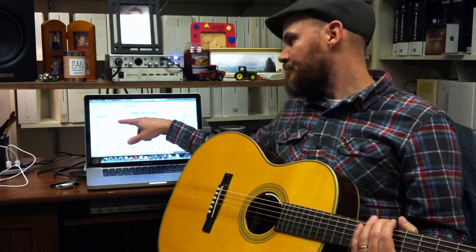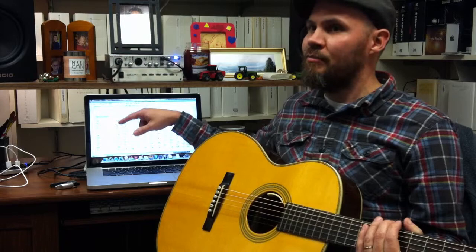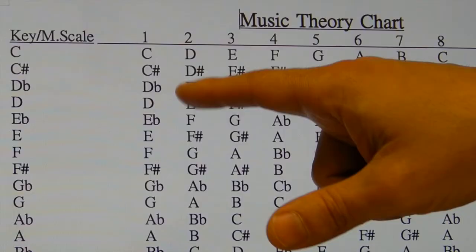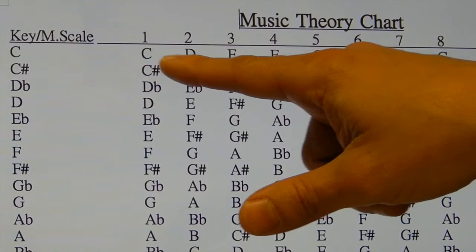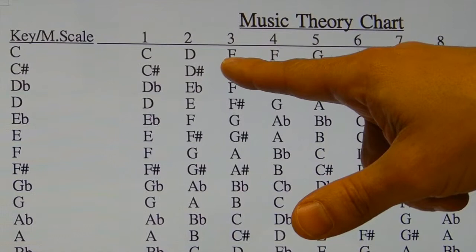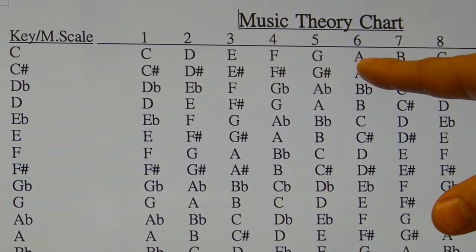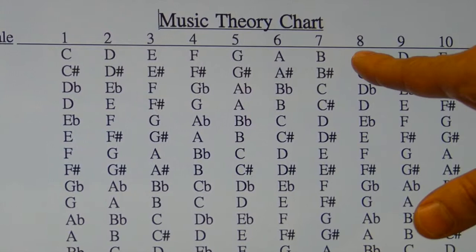A scale is made up of whole steps and half steps, which we talked about in the last video. The first two notes — C to D — is a whole step. D to E is a whole step. E to F is a half step. F to G is a whole, G to A is a whole, A to B is a whole, and then B to C is a half.